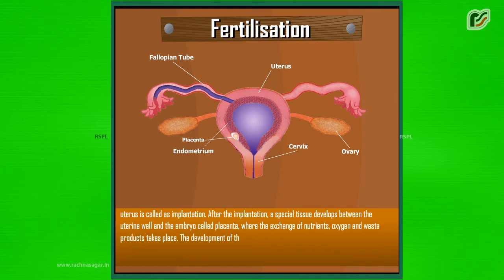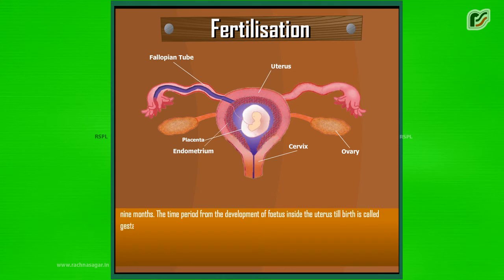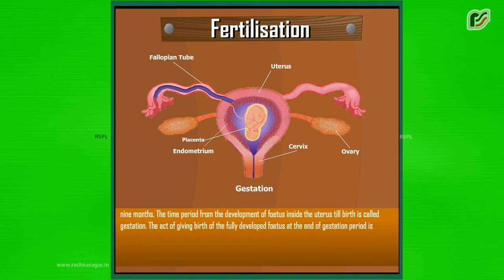The development of the child inside the mother's body takes approximately 9 months. The time period from the development of fetus inside the uterus till birth is called gestation. The act of giving birth of the fully developed fetus at the end of gestation period is termed as parturition.